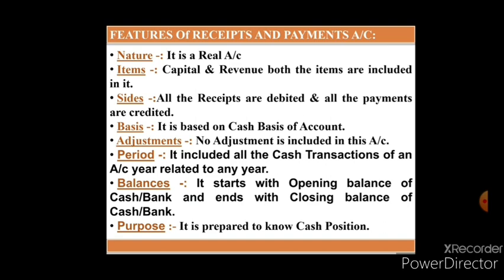Adjustment means outstanding expenses, prepaid expenses, accrued expenses, accrued income, unearned income, depreciation, etc. Period — it includes all the cash transactions of an accounting year related to any year. If you have received or paid the amount during the year, whether they are related to any accounting year, they must be recorded in the receipts and payment account. Balances — it starts with the opening cash balance and ends with the closing cash balance. Purpose — it is prepared to know the cash position of the business or not-for-profit organization.